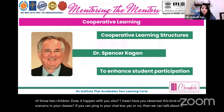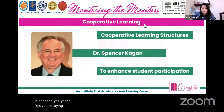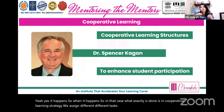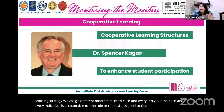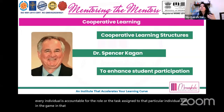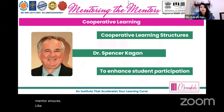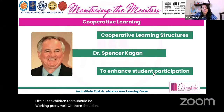Many of you are saying yes, it happens. So in that case, what is done in cooperative learning strategy is we assign different tasks to each and every individual. Each individual is accountable for the role or the task assigned to them. The teacher acts as a facilitator and mentor, ensuring all children are working and participating in the activity.